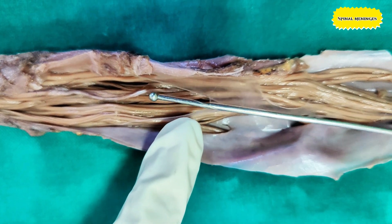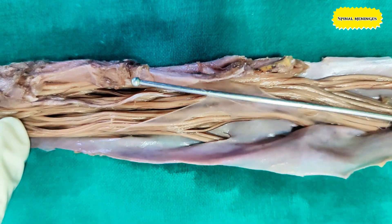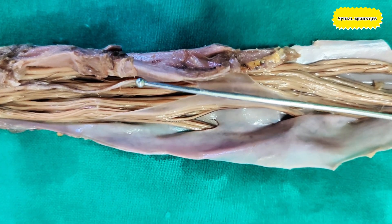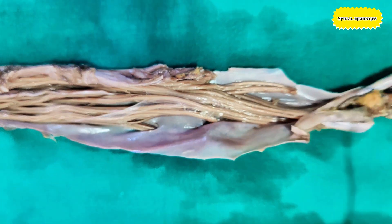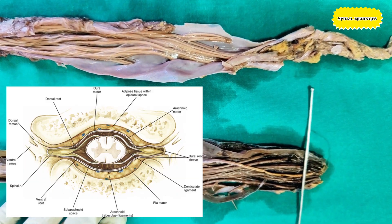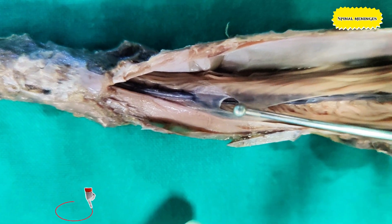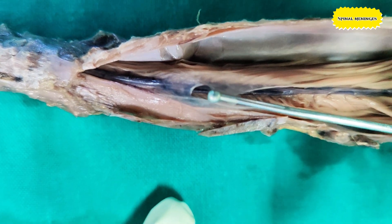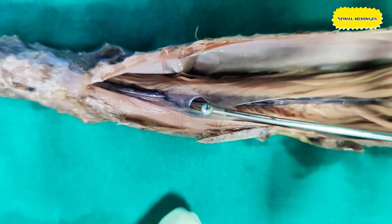The second layer is the arachnoid mater. This arachnoid mater is present below the dura mater. It is a thin, delicate, transparent, avascular membrane which covers the spinal cord loosely. It continues with the arachnoid mater of the brain and ends at the level of S2 vertebra. Below the arachnoid mater there is a subarachnoid space, and between the arachnoid mater and the pia mater below, cerebrospinal fluid is present.